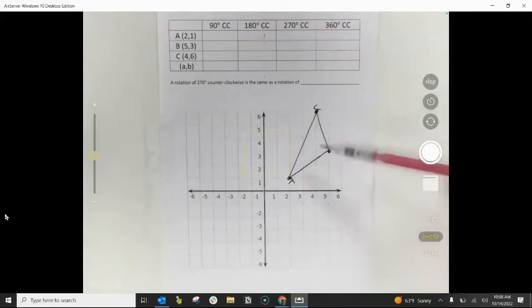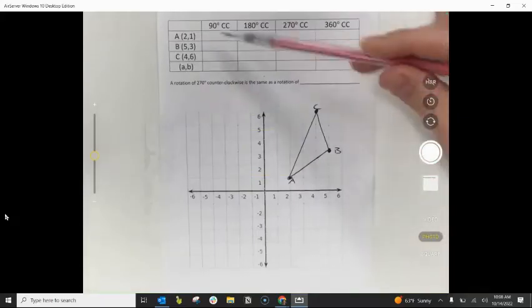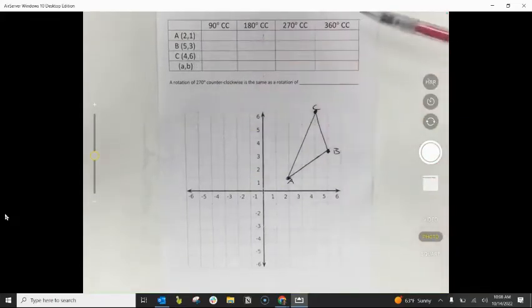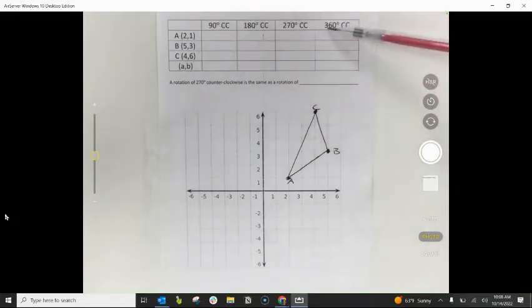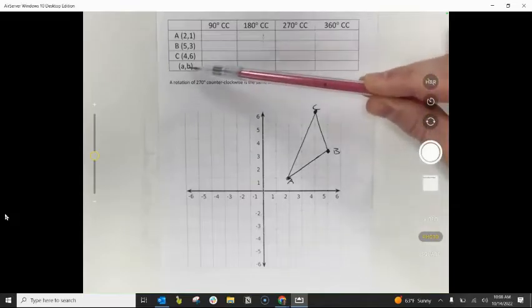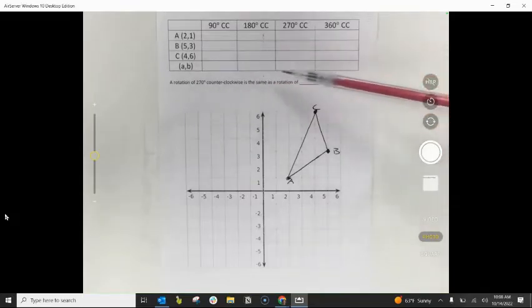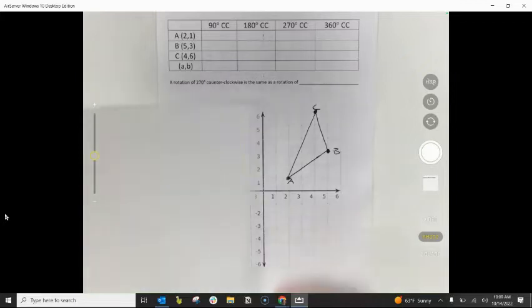So if I start, what we're going to start with is a pre-image, which will be triangle ABC given by these three ordered pairs right here. And what we're going to do is we're going to perform the following rotations, see how the ordered pairs change, and then from there generalize a general form of each rotation.